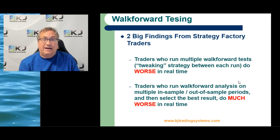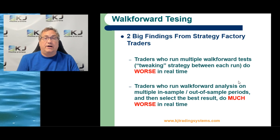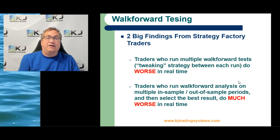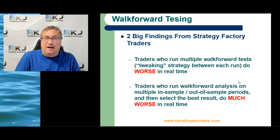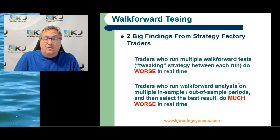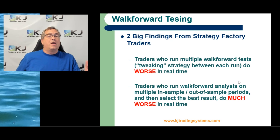A related finding is if you change the parameters of the walk-forward test itself — where you change the in-sample period length and the out-of-sample period length — and if you look at a whole bunch of those and pick the best one, a lot of people do that. TradeStation actually offers something they call cluster analysis, which basically does that; it picks what they say is the best. Just realize that they're using all the data to do that, and that's just optimization. That kind of process tends to do much worse in real time, so you want to avoid that.